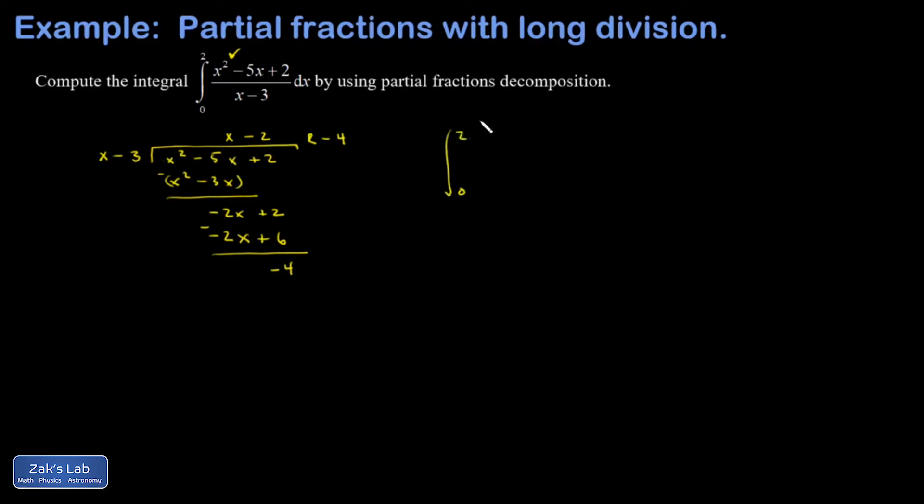It's the integral from 0 to 2 of x minus 2 minus 4 over x minus 3 dx. And in fact, there's no formal partial fractions decomposition required here, because every one of these terms has a guessable antiderivative. This last one from the remainder is just a natural log kind of thing.